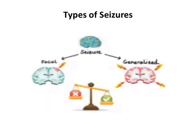Now let's talk about the types of seizures. We broadly have two types: focal seizures and generalized seizures. If the seizure is confined to a specific side of the brain and doesn't involve both cerebral hemispheres, we call it a focal seizure — in this type, the patient usually retains consciousness. On the other hand, if the seizure involves both sides of the cerebral hemisphere, it is called a generalized seizure, and in this type the patient usually loses consciousness.